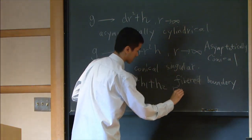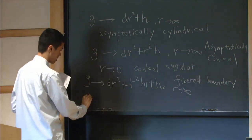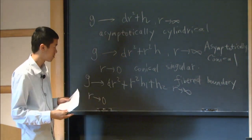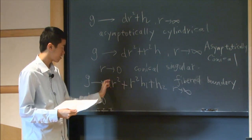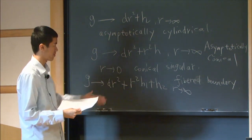And here, we let R go to infinity. If the same thing, but you let R go to zero, then you get a conical singularity along a submanifold.